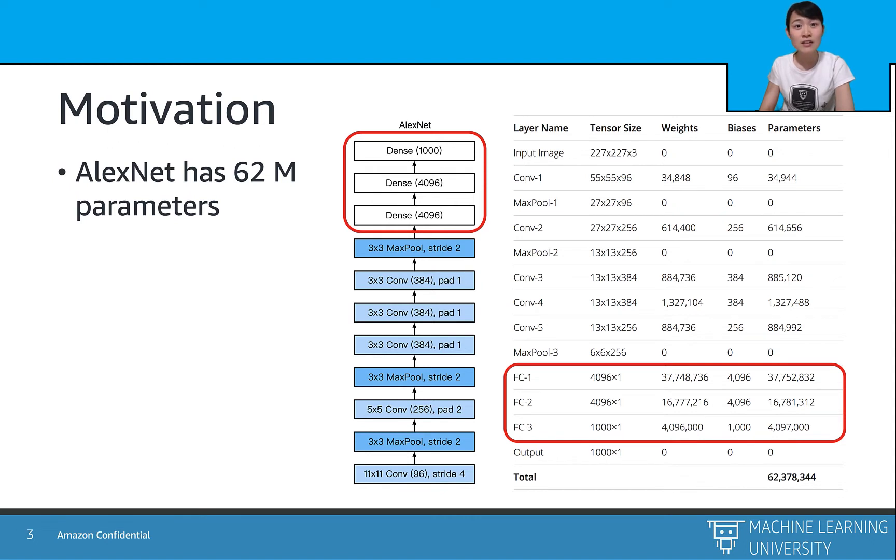Over 90% of them are coming from the last three dense layers or the fully connected layers. Hence, it will be too computationally expensive to add more dense layers.